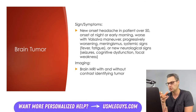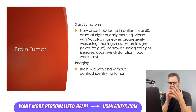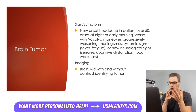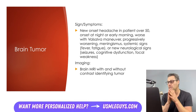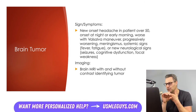The last topic is headache associated with a brain tumor. There's a huge variety of presentations, but the vast majority of patients with headache symptoms will have one of the primary causes we discussed and don't need extensive workups. Red flags for a brain tumor-associated headache include: new onset of headache in a patient over 50, onset at night or early morning, worsening pain with Valsalva maneuver, progressively worsening headaches, and headaches plus systemic symptoms like fever, fatigue, or new neurological signs like seizures, cognitive dysfunction, or focal weakness.